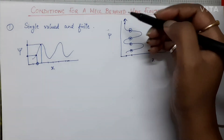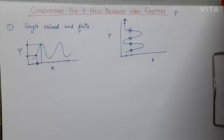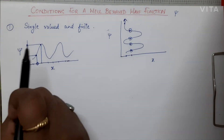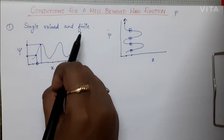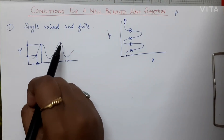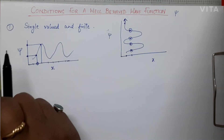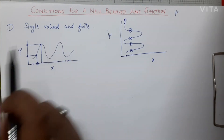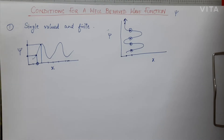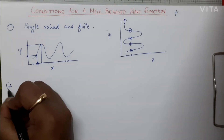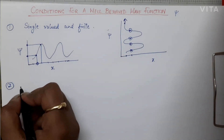This function is not acceptable because it is neither single-valued nor finite. For a wave function to be well-behaved, both conditions must be satisfied — the function must be single-valued and finite. If even one condition is not met, then psi is not a well-behaved wave function. That is the first condition.